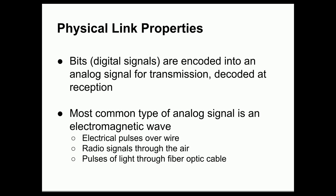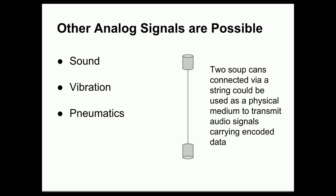Different types of electromagnetic waves can be used: electrical pulses over wire, radio signals transmitted through the air, or pulses of light through a fiber optic cable. It is possible to use other types of analog signals — sound, vibration, or pneumatics. Here I have an example of two soup cans connected by a piece of string; we could technically send audio signals down the string as vibrations and transmit data that way. We don't typically do this, however, because vibrations travel much slower than an electrical signal over wire of the same length.